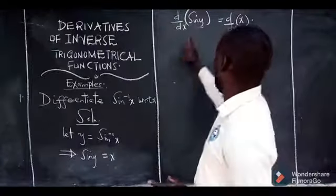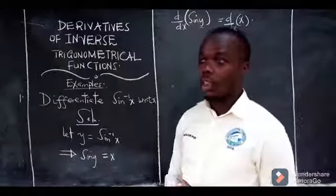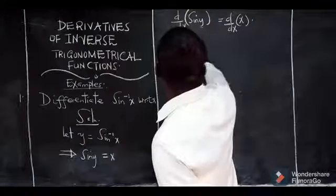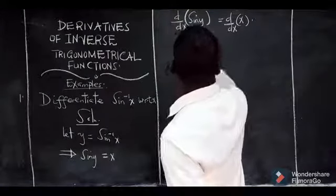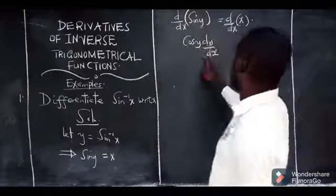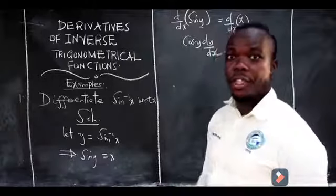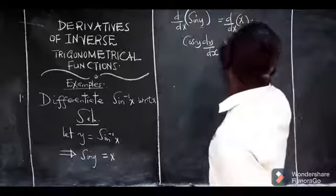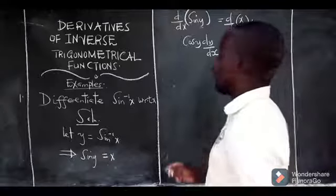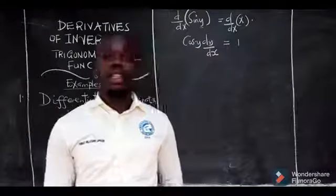Then after, you differentiate sine of y to give you cos of y. So it means we shall have cos of y times dy/dx — don't forget that — because the dy/dx is obtained by differentiating the angle with respect to x. So all this is going to equal 1, because the derivative of x is actually 1.